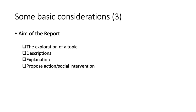You should also define the aim of your report. Is it an exploration of a topic, just a description of an event, or are you trying to explain why something happened? Finally, something like evaluation research — you can propose an action or a social intervention program to deal with a problem, and specify what your intended results are.